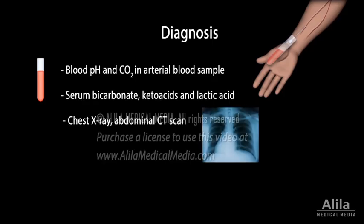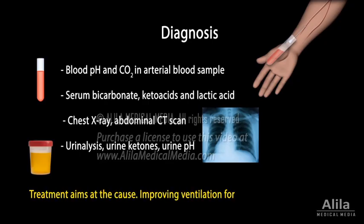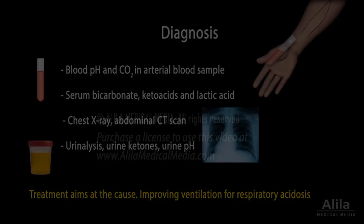Other tests include chest x-ray, abdominal CT scan, urinalysis, urine ketones, and urine pH. Treatment aims at the cause. Improving ventilation is the mainstay for managing respiratory acidosis.